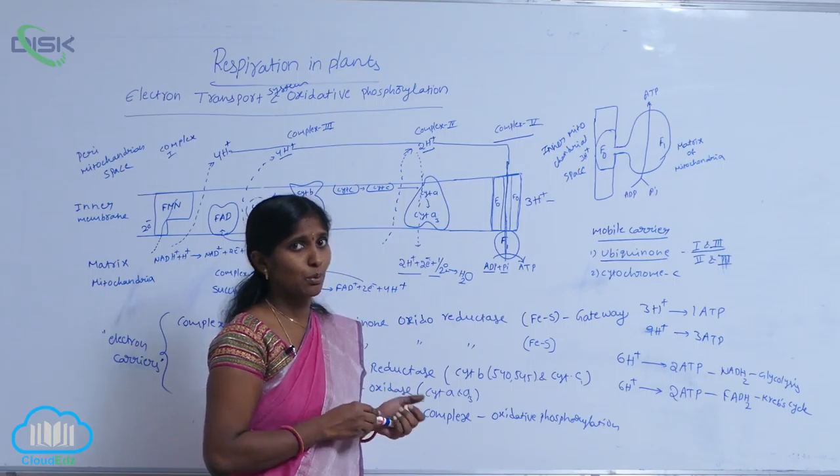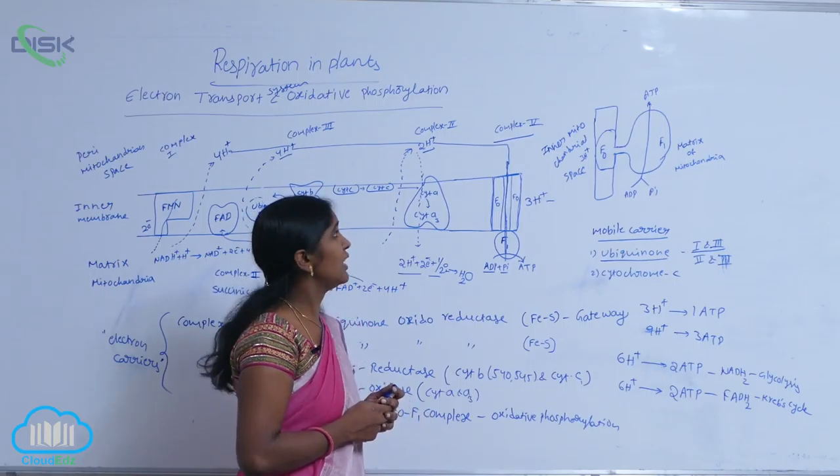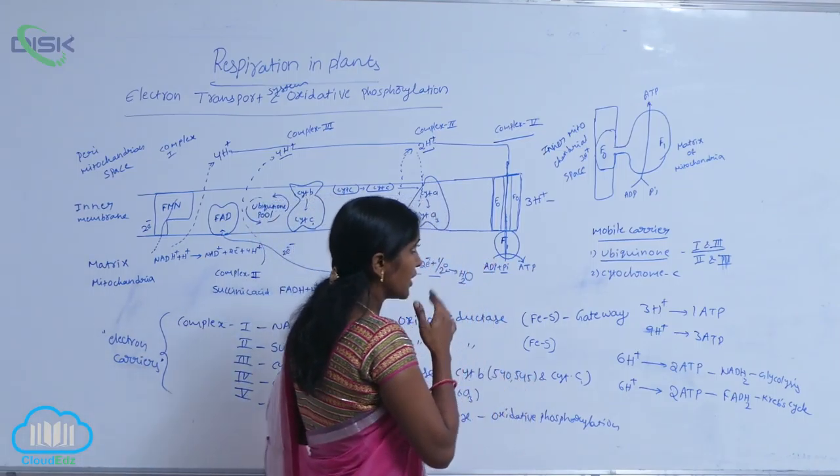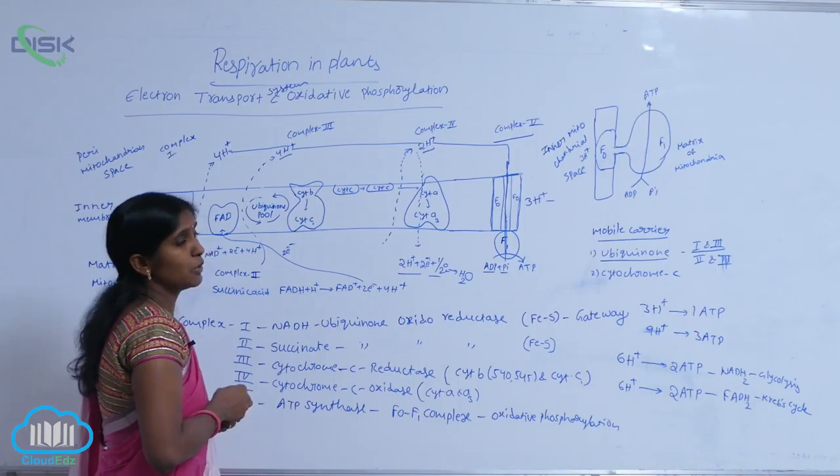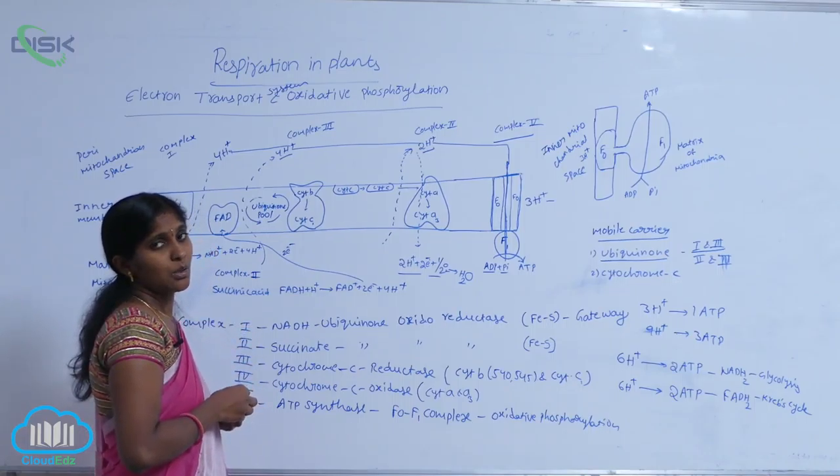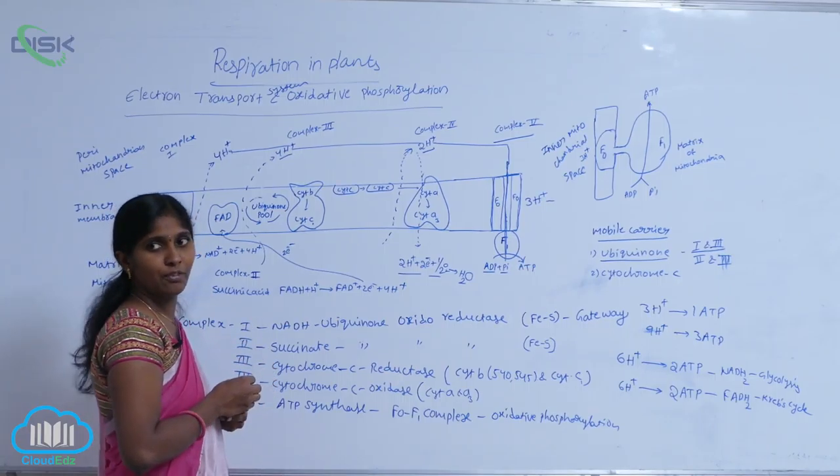F0 granule is a membrane protein embedded in the inner mitochondrial membrane. F1 is present in the matrix of mitochondria. It is a rotatory particle—the smallest rotatory particle in the world.